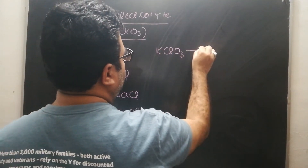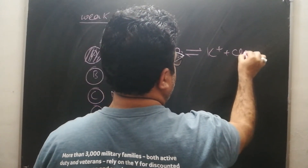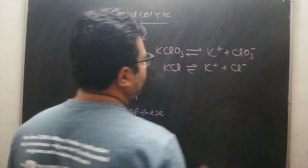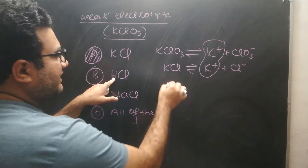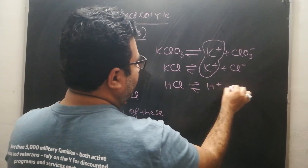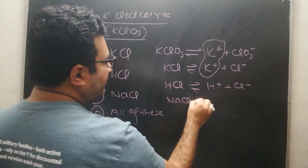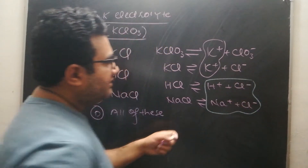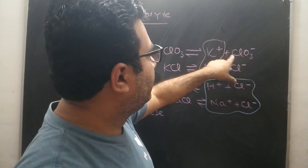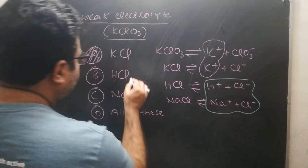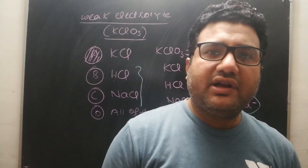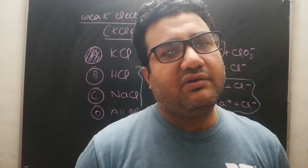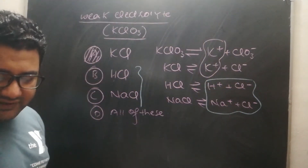KClO₃ ionizes to produce K⁺ and ClO₃⁻ ions. KCl will ionize to produce K⁺ and Cl⁻, so there is a common ion — K⁺ — between them. When HCl ionizes, it produces H⁺ and Cl⁻, and NaCl ionizes to produce Na⁺ and Cl⁻. In both these cases, there is no common ion with KClO₃ — neither K⁺ nor ClO₃⁻. Although HCl and NaCl are strong electrolytes, you cannot use them for suppression unless at least one ion is common. That is the common ion effect.